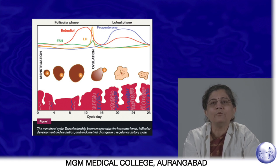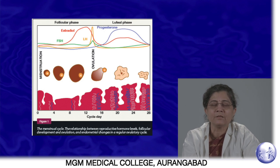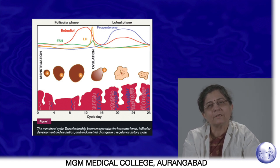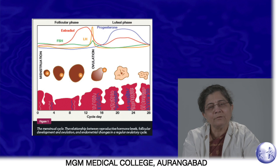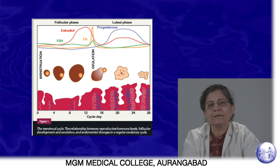Menstruation is the result of an unfertilized ovum in the previous cycle. Events in this cycle start with regeneration driven by estrogen secretion. In the first half of the cycle, there is almost no LH or progesterone. As estrogen rises, its peak triggers an LH surge causing ovulation, after which estrogen and progesterone are again secreted. As the corpus luteum dies, both levels fall.